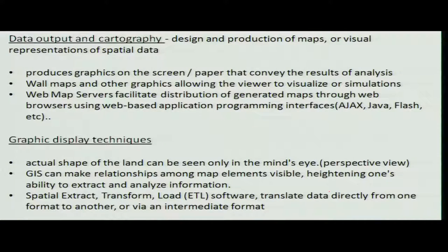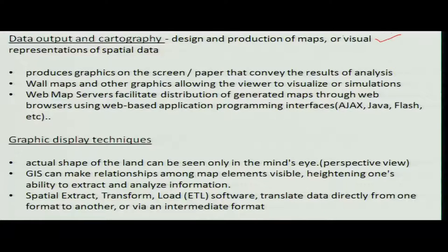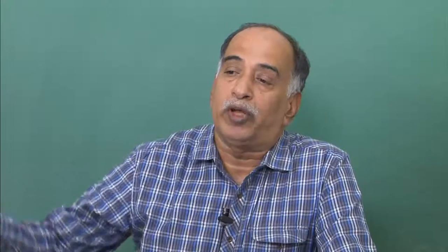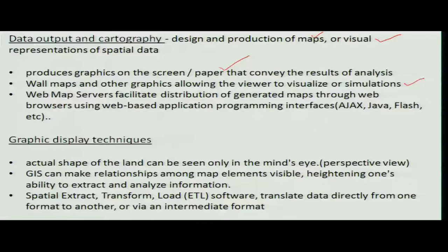Now, what outputs can we get from GIS? Once all the old records are converted into digital mode and used in GIS, the results can be presented in several ways. One is visual — in the form of a map on screen or printed on paper. You can also produce colorful wall maps. A third option is to use map servers and publish the outputs on websites.